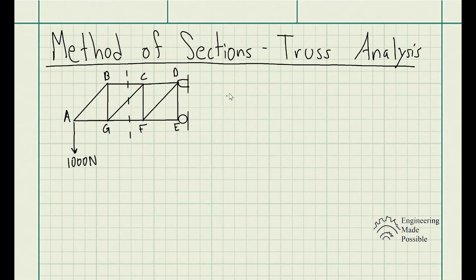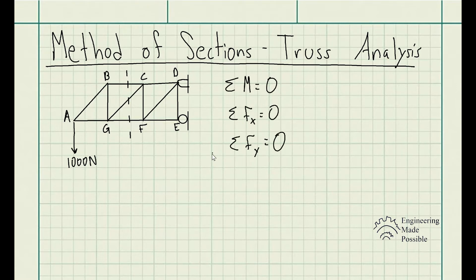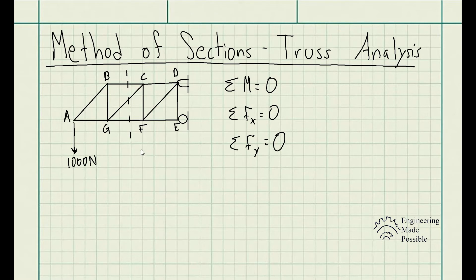Since we have three static equilibrium equations, it is best to cut the truss at a point where it only intersects three members. This cut has one, two, three members — perfect, because we have three equations and three unknowns. Remember, once we cut it, we can analyze either side.